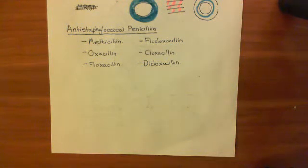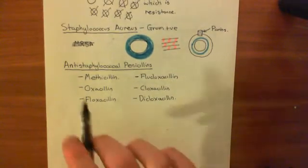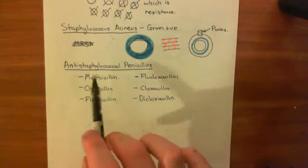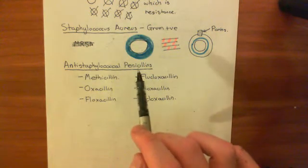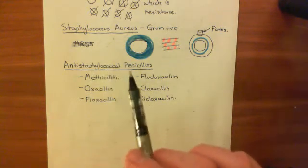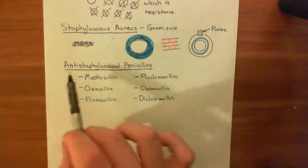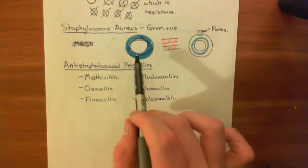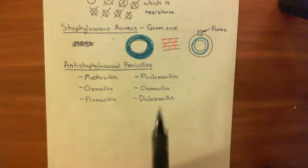Welcome to this next video on penicillins and beta-lactamase enzymes. We've seen the first modification made to penicillins, which gave us the anti-staphylococcal penicillins. The aim was that these molecules should be resistant to degradation by beta-lactamase enzymes, and therefore effective against Staphylococcus aureus bugs which are producing beta-lactamase enzymes.